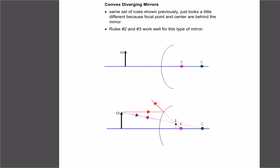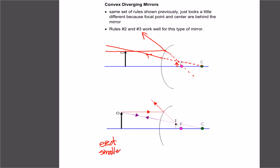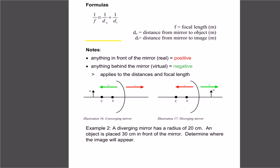Diverging means the rays spread out and won't converge. Following the same rules: a ray goes in parallel and would go through the focus, but we can't go through the mirror, so it reflects back along a dotted line. The third rule — going through the center — hits the mirror and reflects back, but we extend it as a dotted line through the center. These dotted lines intersect behind the mirror, so the image is right-side-up (erect), smaller, and virtual because it's behind the mirror.